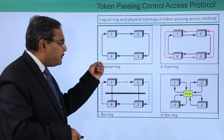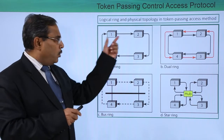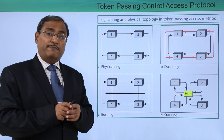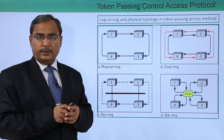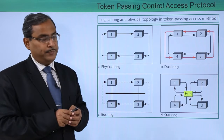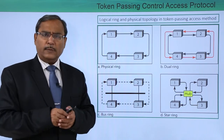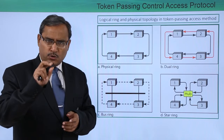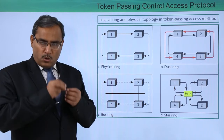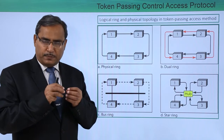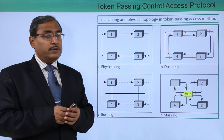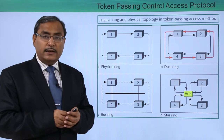You might be asking what is the purpose of the token. All these particular stations are accessing a common shareable media, so there is a finite probability of collision. Collision takes place when multiple stations are transmitting at the same time. To avoid this collision, there is a special type of frame known as a token, which is nothing but a permission. When the token is made accessible or captured by a certain node, only that node can transmit its information. A node cannot transmit until and unless it can capture the token.